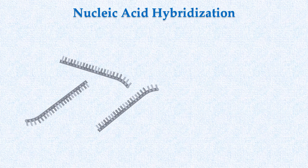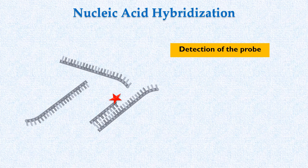When this probe is added to the sample containing the target sequence, it will bind to it because of the complementary base pairing. Once bound, we can detect the bound probe by visualizing or detecting the label.